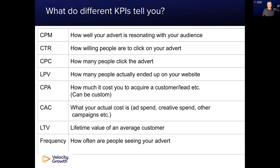Your click-through rate is how many people are willing to click on your advert. When you're moving from CPM into CTR, you'll start to see what the domino effect of these metrics can be. If your CPM is higher, your click-through rate is low, and your CPC is affected — everything falls down once something back along starts creeping up. You're going to have that domino effect.